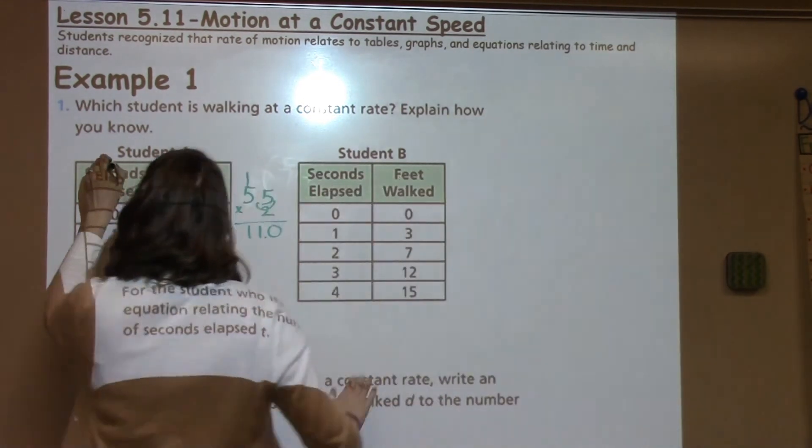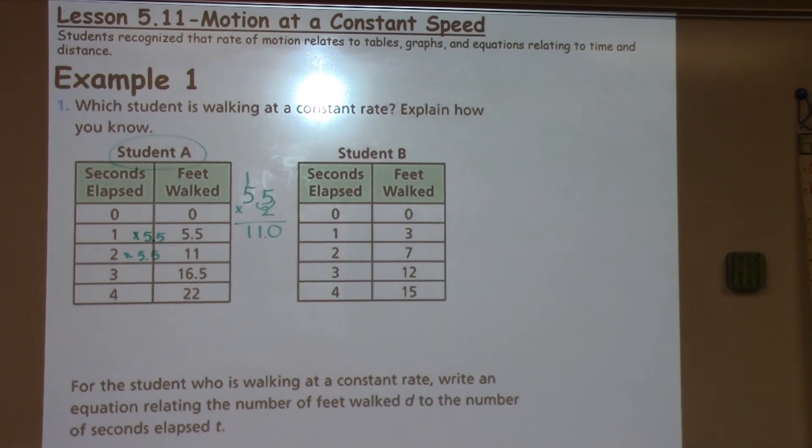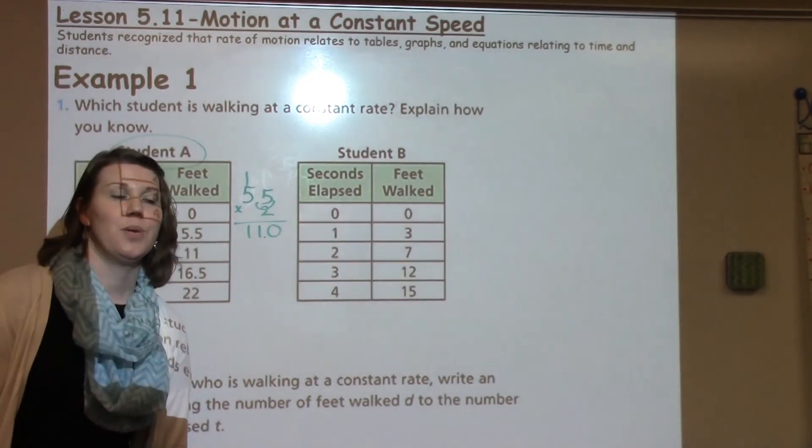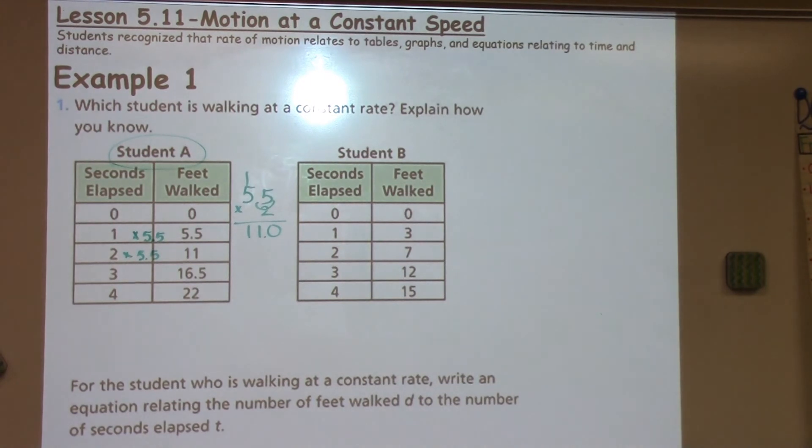So Student A is walking at a constant rate by looking at the tables. The second part of this question: students were asked to look at the student who is walking at a constant rate, which we know is Student A, and write an equation relating the number of feet walked D to the number of seconds elapsed T.